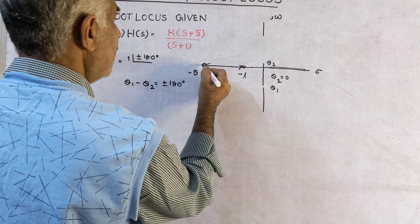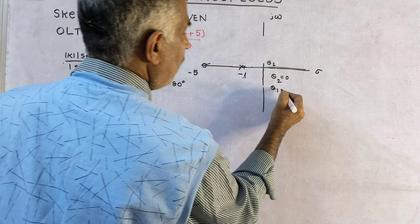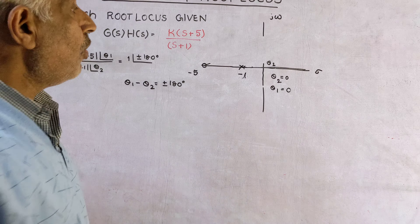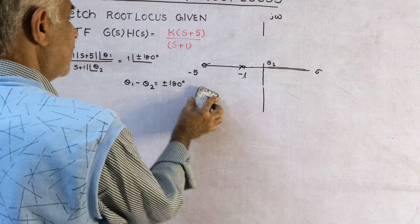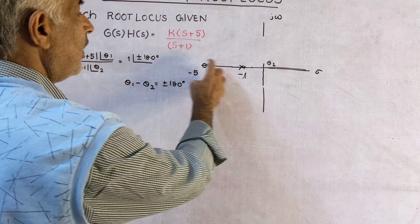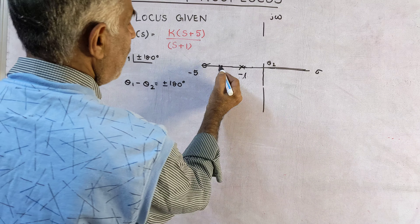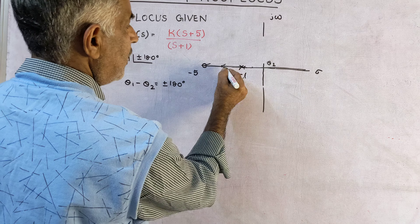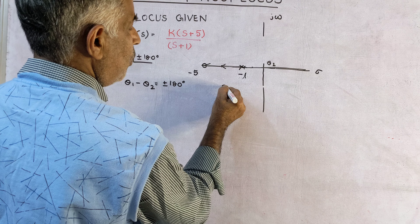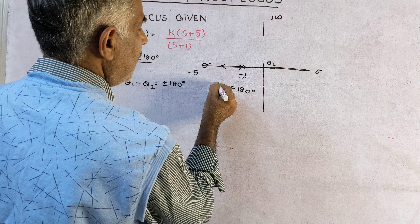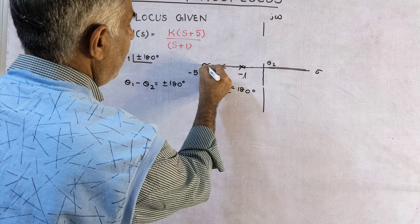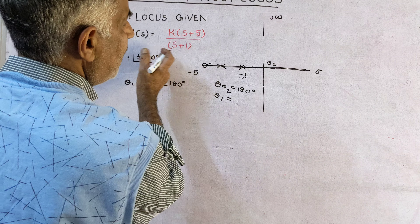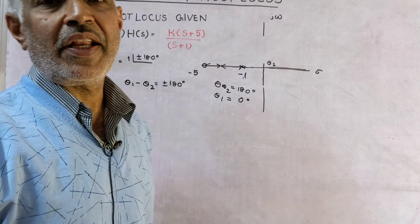This is the theory of root locus. If you apply the angle criterion, theta 1 minus theta 2 must equal plus or minus 180 degrees. If you take a trial point and join it with the zero, that gives angle theta 1, and joining with the pole gives theta 2. Both theta 1 and theta 2 are positive acute angles measured anticlockwise. Subtracting one acute angle from another does not yield 180 degrees, so this cannot be the root locus.